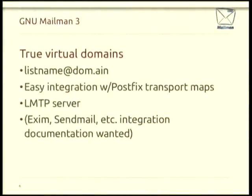Another thing you may know from Mailman 2 is that it sort of supports virtual domains — if you have example.com, example.org, and example.net all running on the same mailing list server, Mailman can kind of handle that, with one important limitation: you cannot have the same mailing list name across those domains. Mailman 3 does away with that because we use the posting address of the mailing list essentially as the primary key into the database, so those are always unique. foo@example.com, foo@example.org, foo@example.net — they're all unique and point to unique mailing list records. So virtual domains, we sort of get them for free.